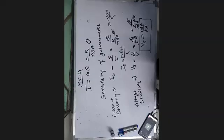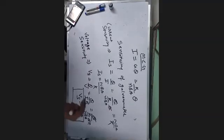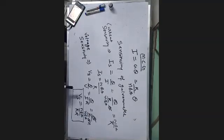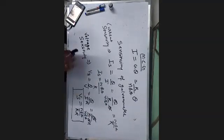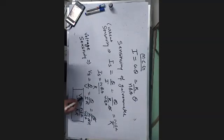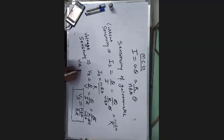Let's discuss the current sensitivity first: Is equals NBA by k. When you increase the number of turns, the current sensitivity is increasing. But you might think that since N appears in the voltage sensitivity formula too, it would also increase.